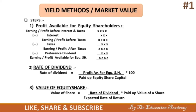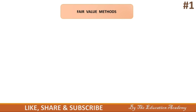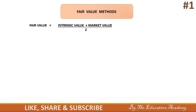Third method है Fair Value Method, और यह सबसे simple method है। इसका formula है: Fair Value = (Intrinsic Value + Market Value) ÷ 2। Fair value find करने के लिए पहले intrinsic value find करनी पड़ेगी, फिर market value find करनी पड़ेगी, तब जाकर fair value मिलेगी।